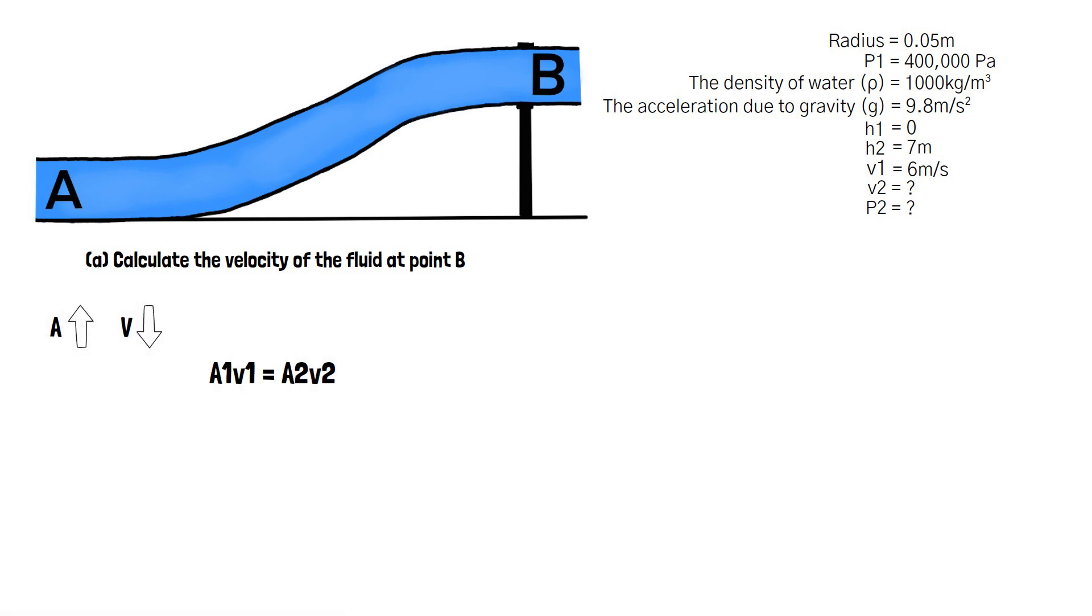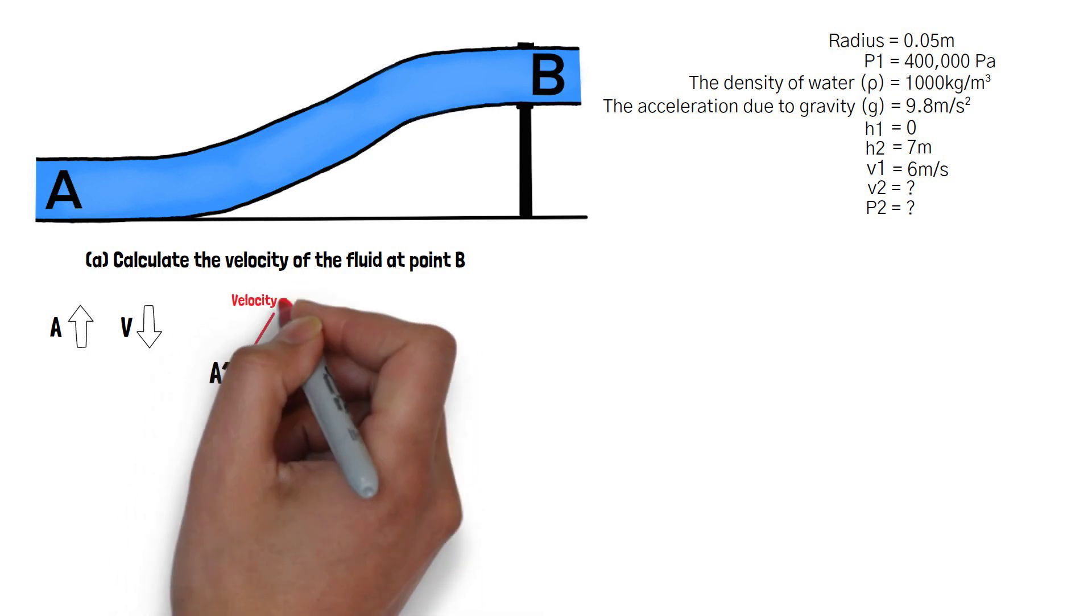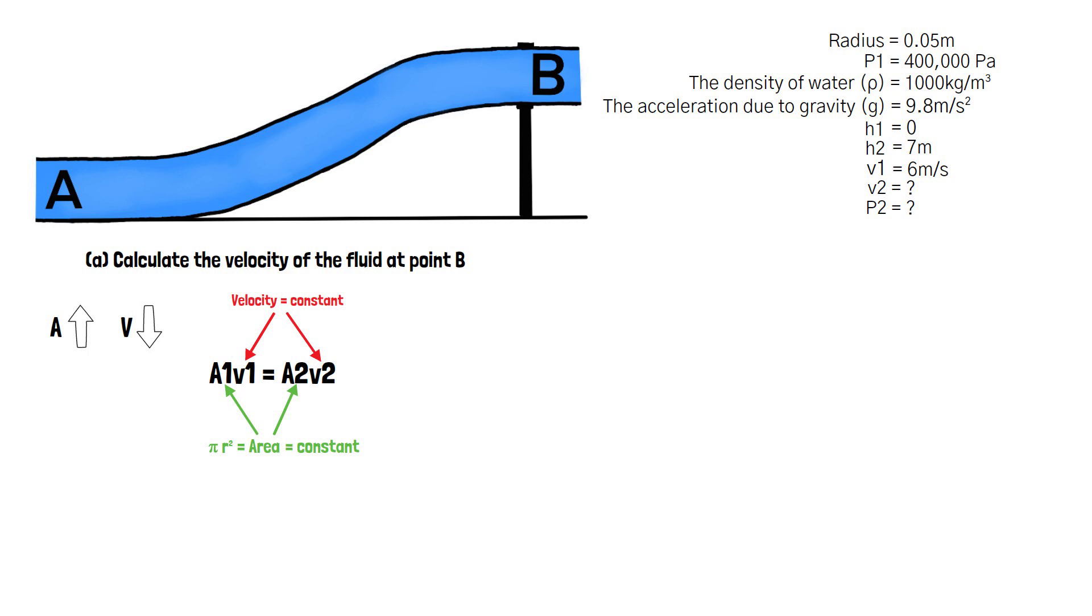As the radius of the pipe does not change and because the area equals πr², the area of the pipe also doesn't change. Because the area is constant, the velocity must also be constant for the continuity equation to be true. So the velocity of the fluid at point B remains as 6 meters per second.